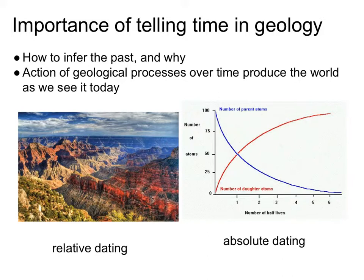On Earth, we have a couple of different ways of approaching this. We can get a general idea of what events happened when, just by looking at the relative order of events. Here on the left is a picture of the Grand Canyon. What do you notice about the Grand Canyon? What do you see when you're looking at it? Different layers.